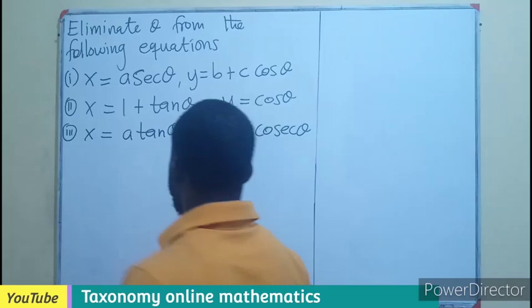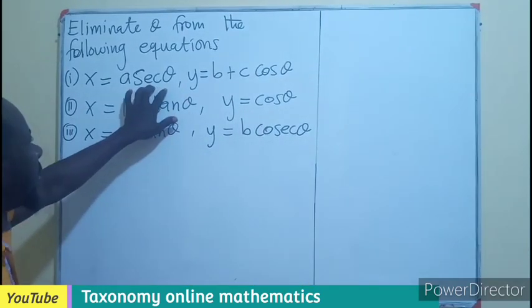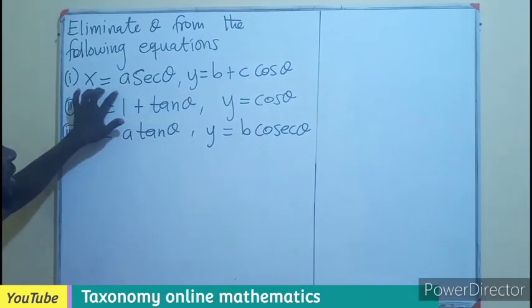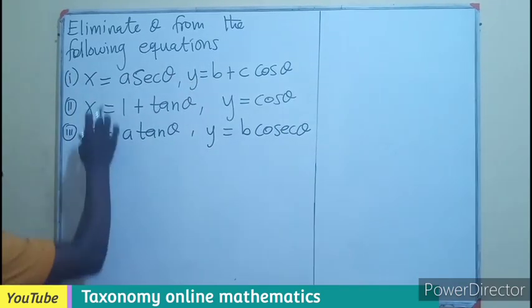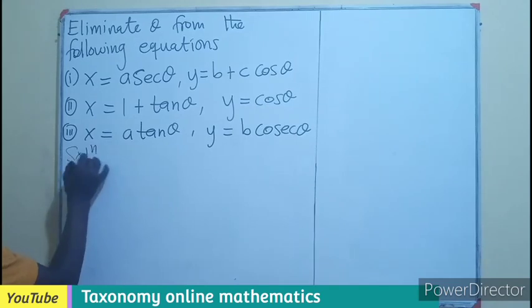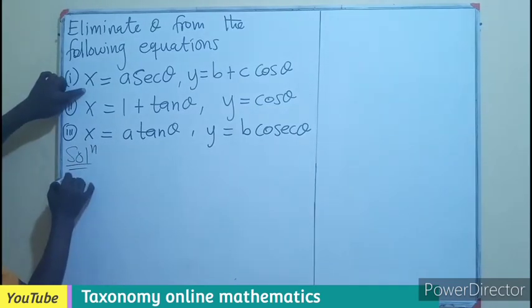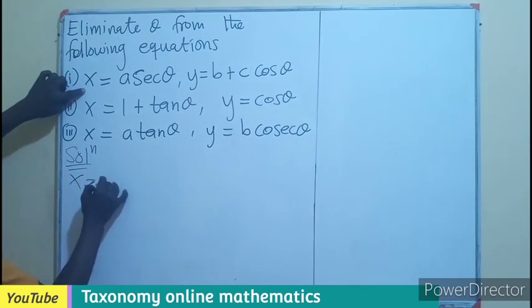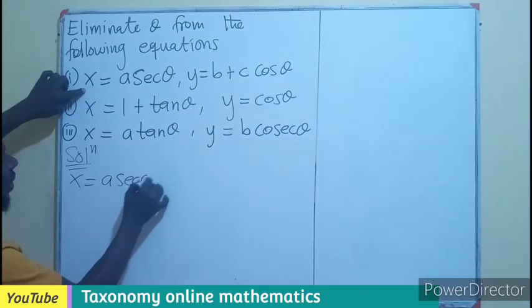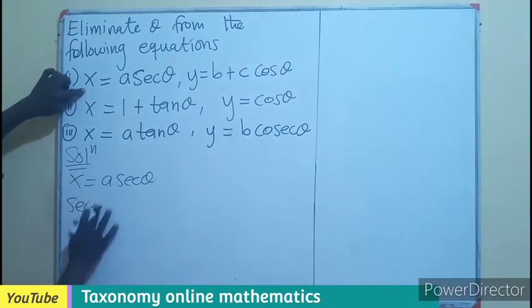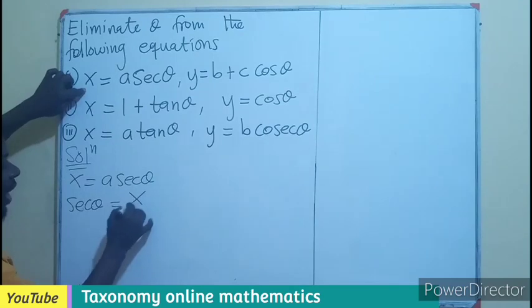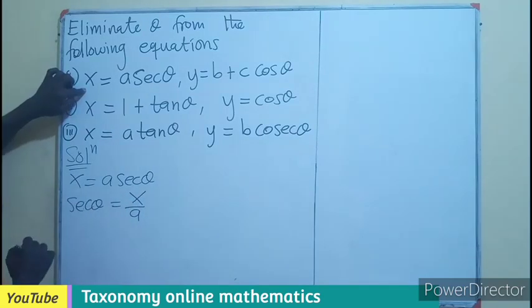So what we can do is let's make sec theta the subject from the first part. There are two parts in one question. So from here, we can say X equals A sec theta, where sec theta is going to be equal to dividing both sides by A. That will give you X over A.